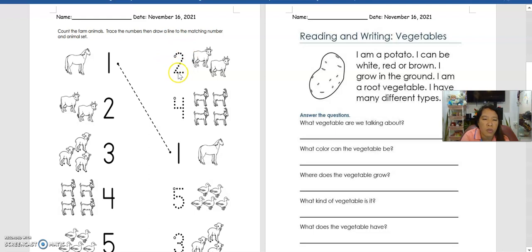Next we have goats. There's a baby goat - we call that one a kid. This one is ram, and these are ducks. You have to find the same set of animals, draw a line, and then trace the number. Do you understand? Good job.